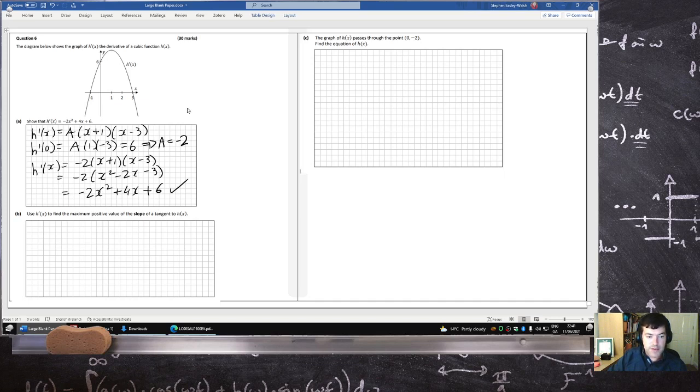Use h derivative to find the maximum positive value of the slope of the tangent to h(x). So h derivative is the slope of the tangent, and we want to find the maximum positive value. So we want the maximum h dash, which means we want this point here. It looks like it's 1, so we want to maximize h dash.